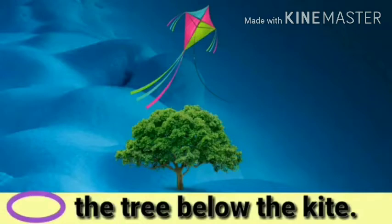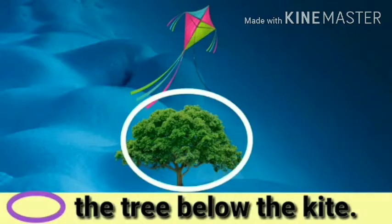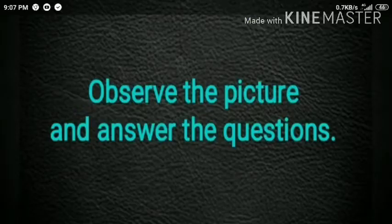In this picture, we have to circle the object below the kite. Here, a tree is below the kite.